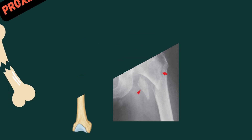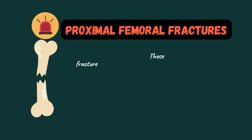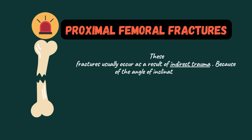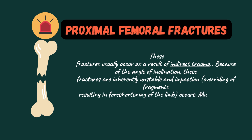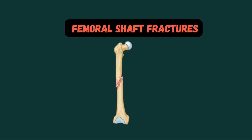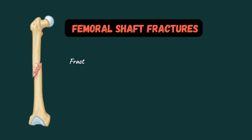Here you can see a diagram as well as a radiograph of a patient having an intertrochanteric fracture. These fractures usually occur as a result of indirect trauma. Because of the angle of inclination, these fractures are inherently unstable, and impaction with overriding of fragments results in foreshortening of the limb. Muscle spasm also contributes to the shortening of the limb.